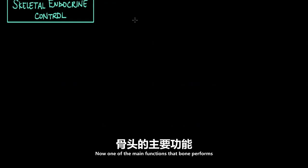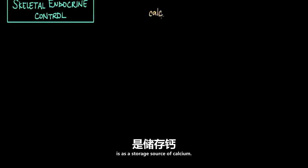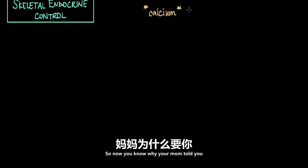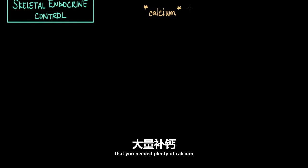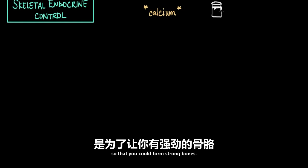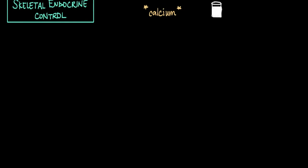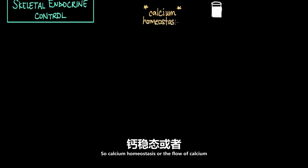One of the main functions that bone performs is as a storage source of calcium. That's why your mom told you that you needed plenty of calcium, probably in the form of a tall glass of cold milk, so that you could form strong bones.